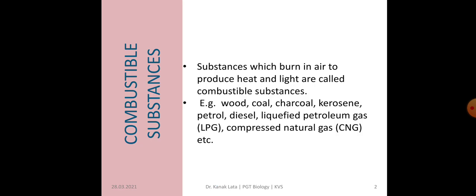First, it is about combustible substances. What are combustible substances? These are those substances which burn in air and after burning they produce heat and light. Those substances which produce heat and light after burning are called combustible substances. For example: wood, coal, charcoal, kerosene, petrol, diesel, LPG (liquefied petroleum gas), and CNG (compressed natural gas). So these are the combustible substances.